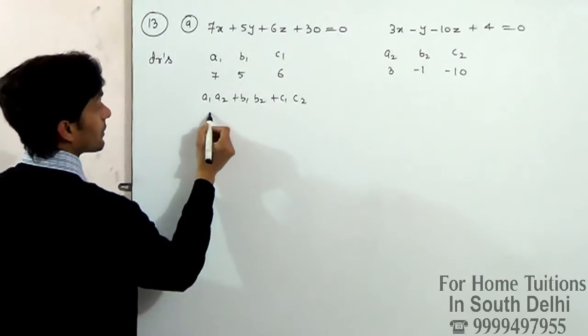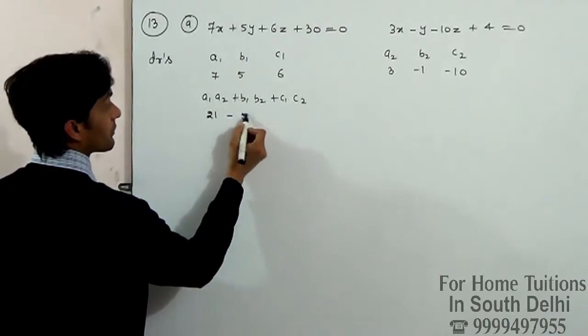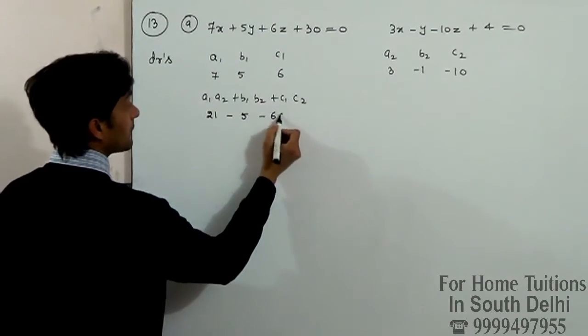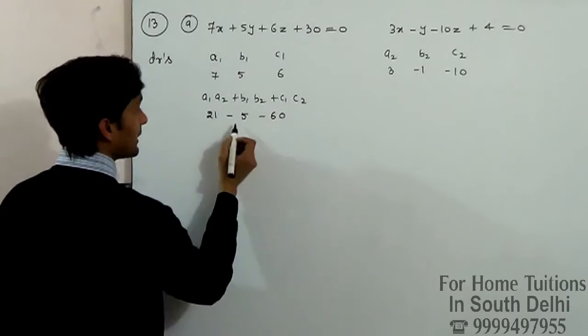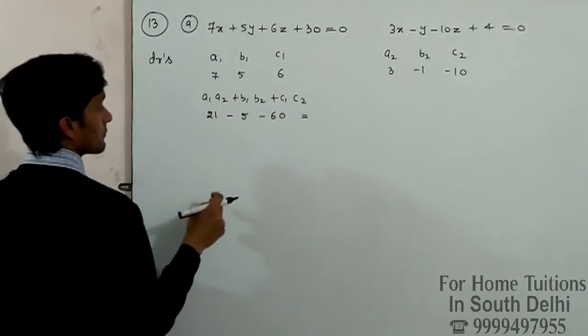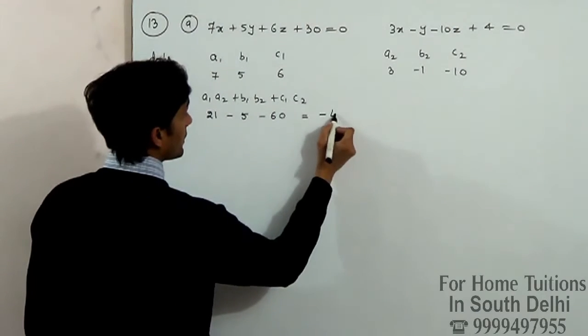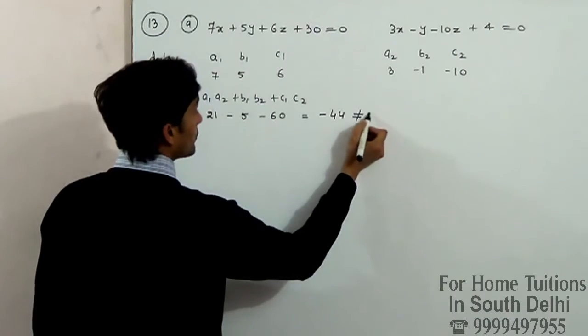So, say it: 7*1, 2*1, minus 5, minus 16. How much? 44, 44, minus 40, which is not equal to 0.